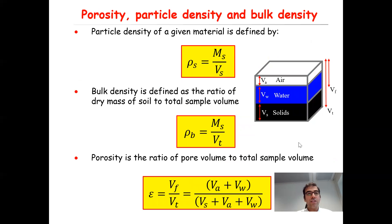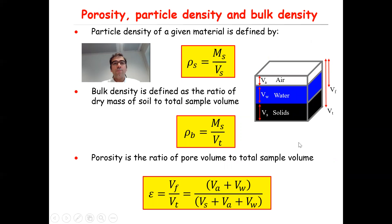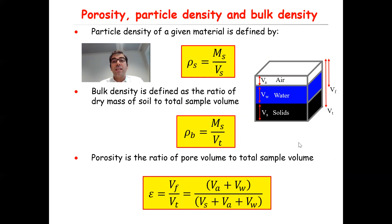First, let's start with particle density. Particle density, or density of the solid phase of a given material, is defined by rho_s — that is the particle density or solid phase density — equal to Ms, the mass of the solid, divided by Vs, the volume of the solid.